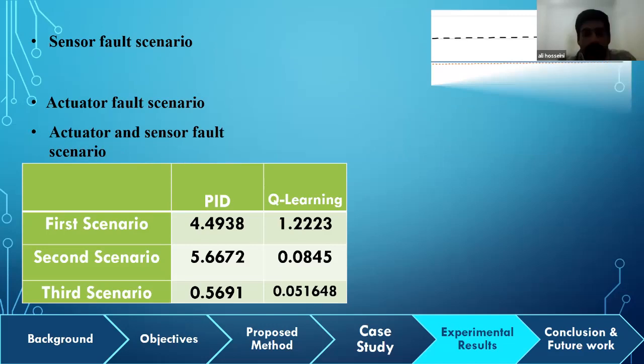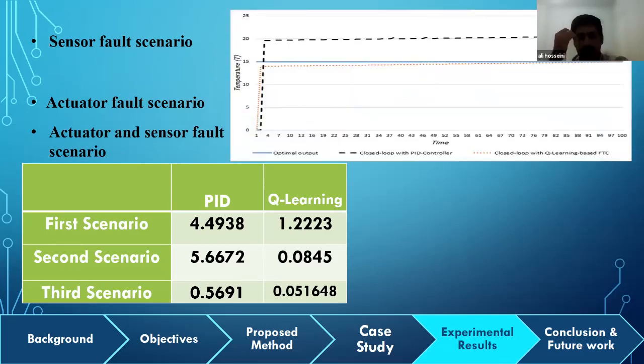Finally, in the third scenario, a constant actuator fault with amplitude of 0.1 and a time incipient sensor fault with amplitude of 4 and slope of 0.01 were added to the closed-loop system. The figure shows the performance of the closed loop with conventional PID controller and closed-loop system with Q-learning-based fault-tolerant control. The total MSE is shown in the third row of the table. The results show that the Q-learning controller could find optimal action to stabilize the closed-loop system as well as possible, and its performance is much better than the PID controller.